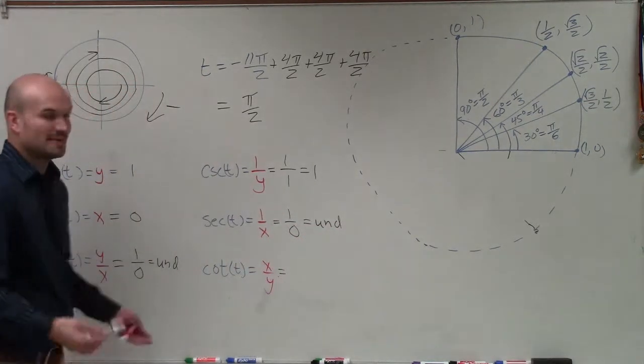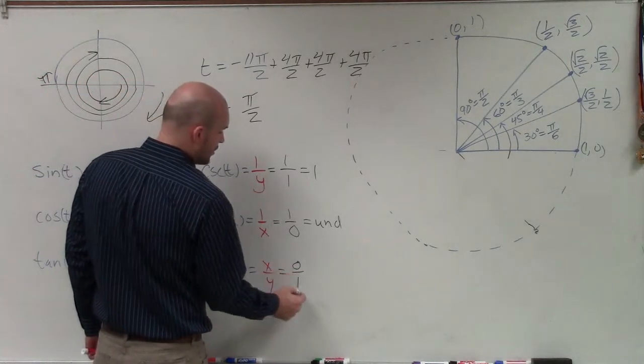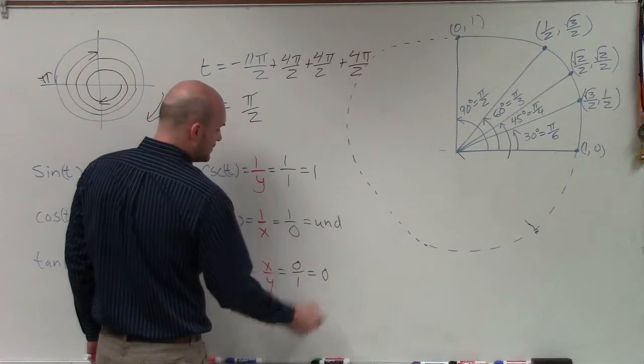And for cotangent—remember we can't divide by 0—we have 0 over 1, which equals 0.